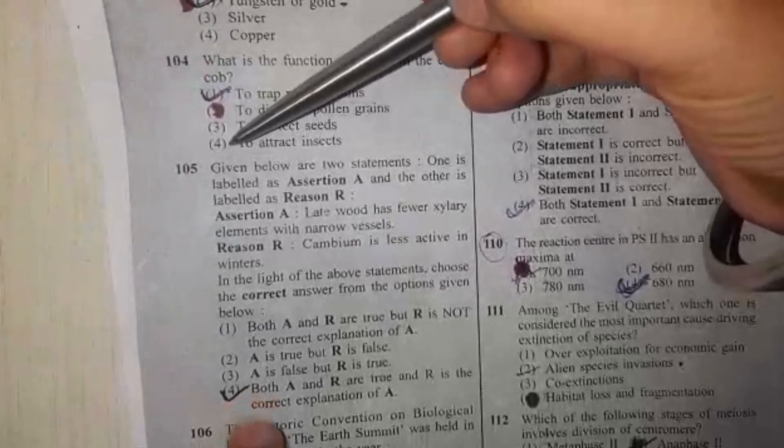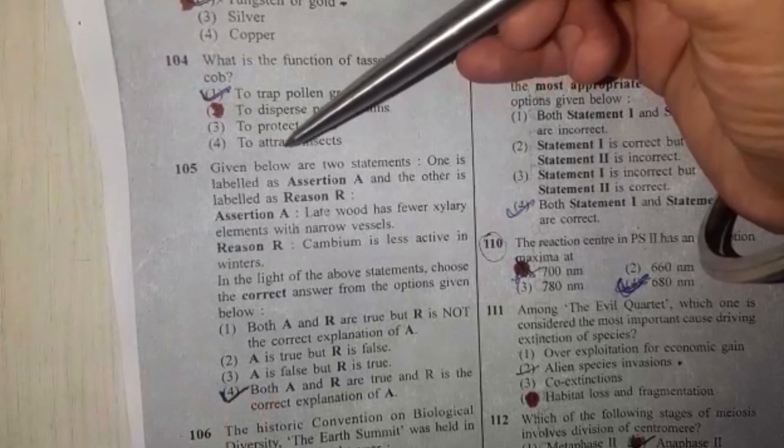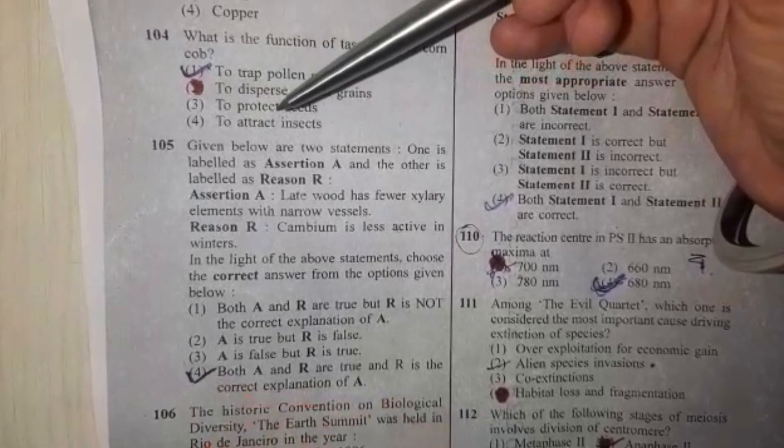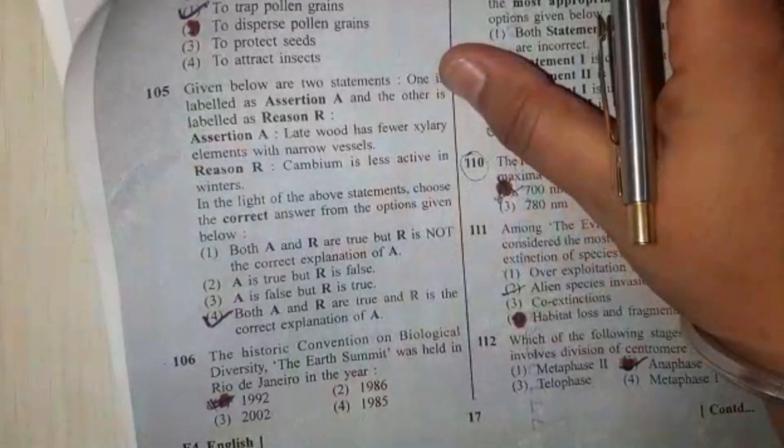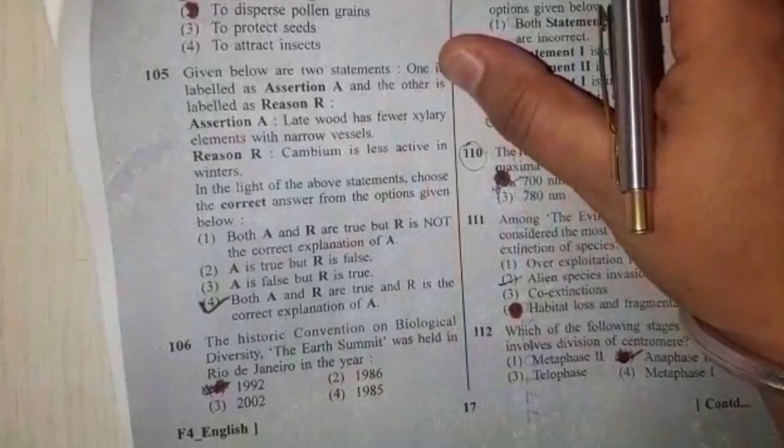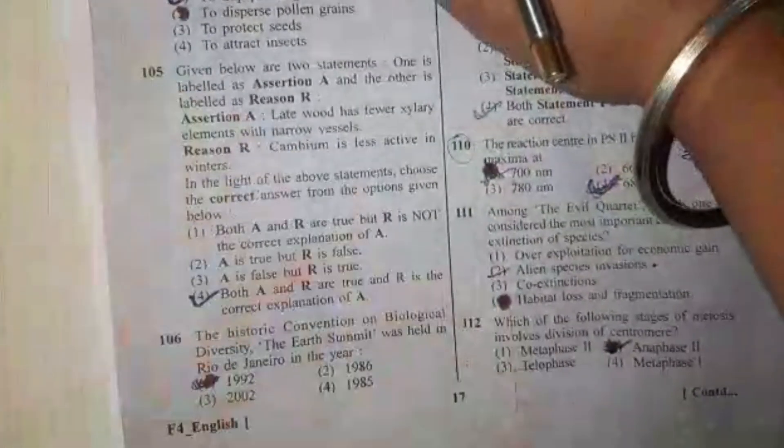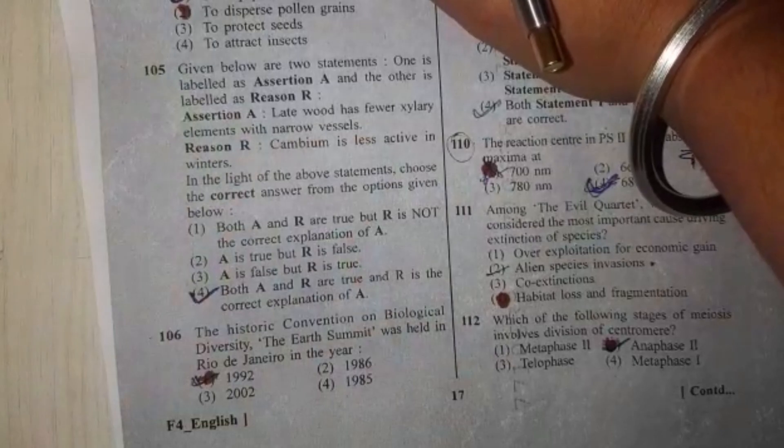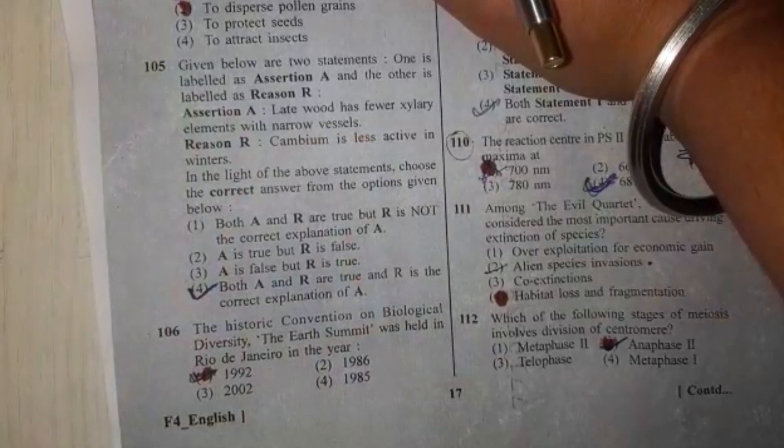Next question: Given below are two statements, one labeled as Assertion and one as Reason. The assertion is: Latewood has fewer xylem elements with narrow vessels. The reason is: Cambium is less active in winter. These two statements are right, and the reason is the correct explanation of the assertion.